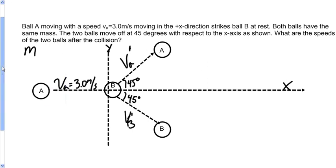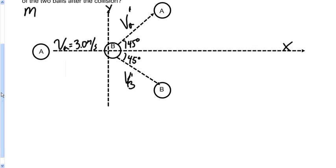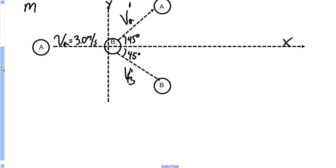In order to solve this problem, we're going to use conservation of momentum. Since we weren't told whether or not the collision was elastic, we're just going to stick to using conservation of momentum to try and solve this. So what we're going to do is break it up into the x and y components for conservation of momentum, and we're going to solve each piece.